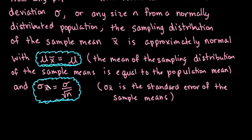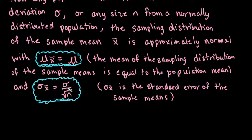The population standard deviation sigma divided by the square root of the sample size is known as the standard error, or the standard deviation of the sampling distribution, sigma sub x-bar. This tells us on average how much each of our sample means differs from our population mean. It is found by taking the population standard deviation and dividing by the square root of the sample size.